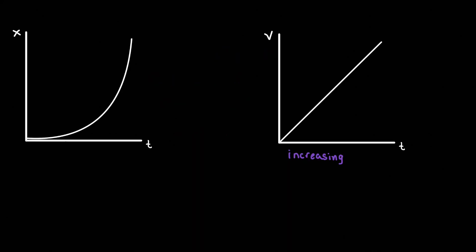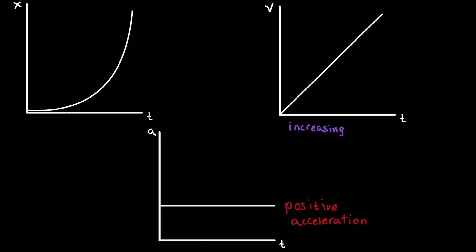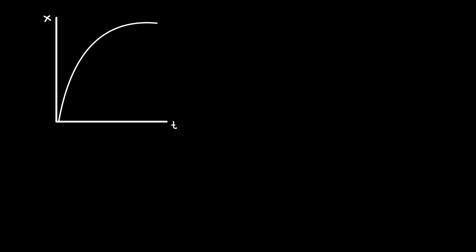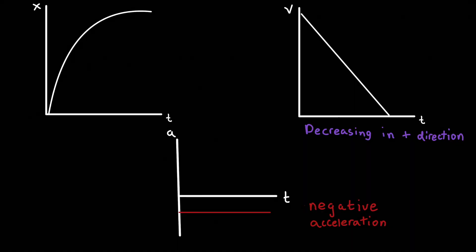If the position time graph has an exponential increase, velocity is increasing in the positive direction, and we get a nice slope — this also means we have acceleration shown as a straight line. Now if we have a hill-shaped slope for the position graph, velocity is decreasing in the positive direction and we have negative acceleration. The acceleration is negative because the final velocity on the velocity graph is less than the initial velocity. You can also remember this by observing which direction velocity is moving — if velocity moves down, acceleration is negative.